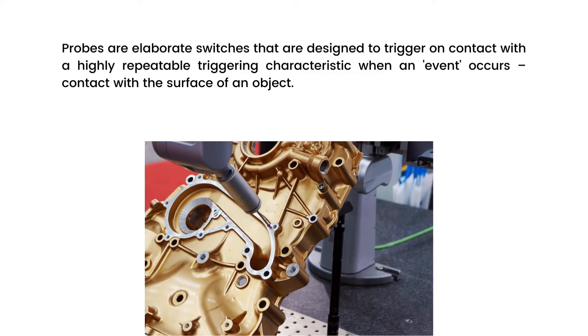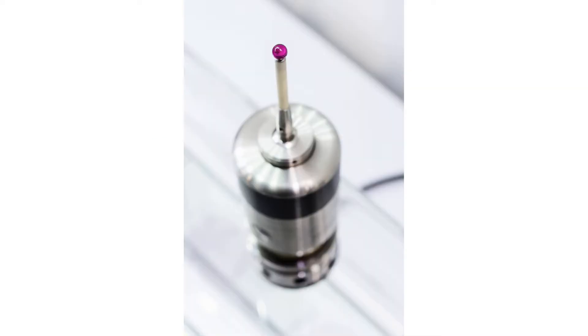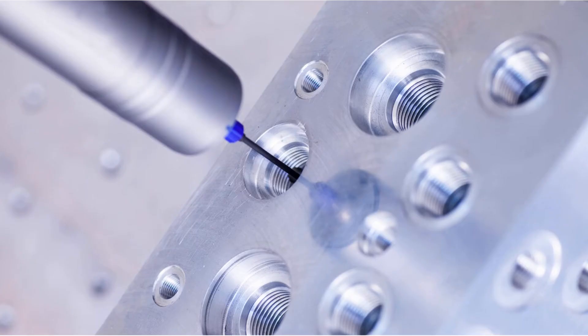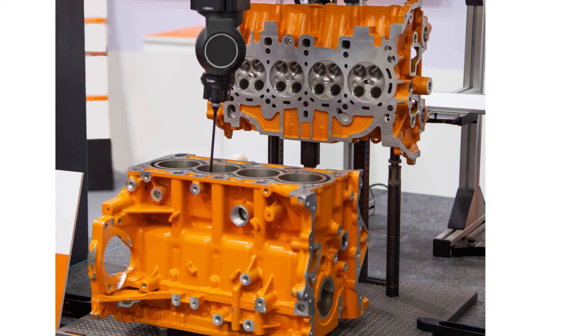Probing is traditionally associated with contact probes that are used for dimensional measurement, that is metrology, on CMMs that is coordinate measuring machines. A touch trigger probe takes a series of single measurements at discrete points. When the sensor inside the ball detects the workpiece it sends a signal with the exact coordinates.